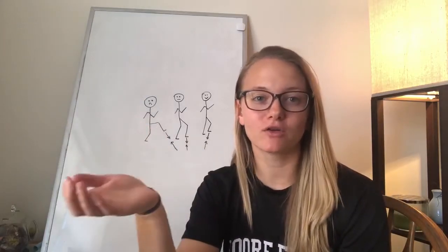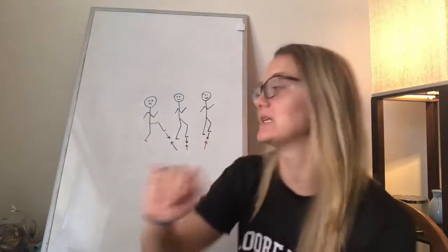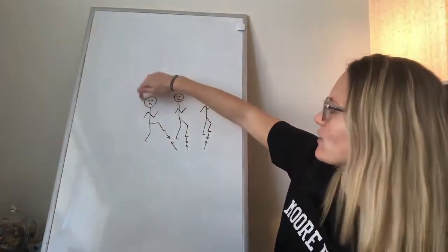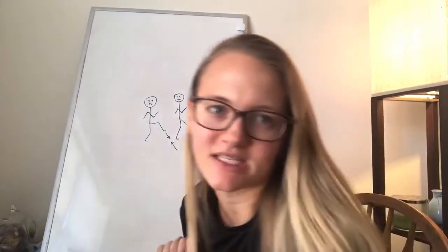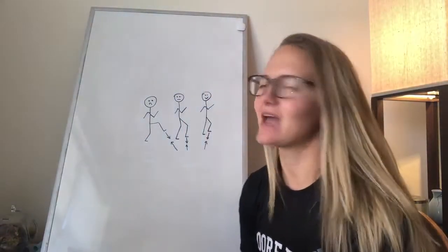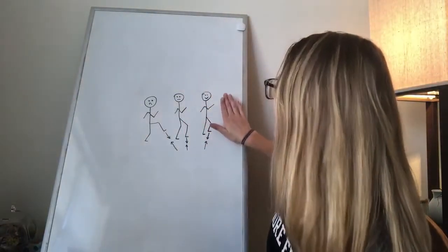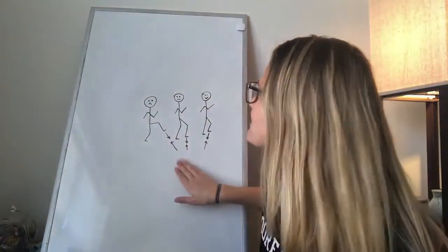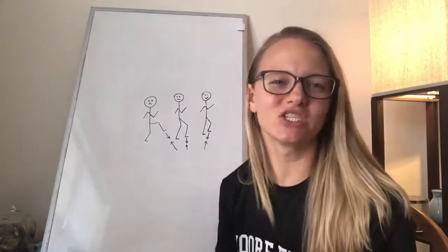So overstriding means that your leg is coming down way out in front of you when you land. So that's like this guy over here on our left. He's got the sad face because he's overstriding. Then we come over here to the right and this guy's in a good position. So he's happy. And then this middle guy is just doing all right.